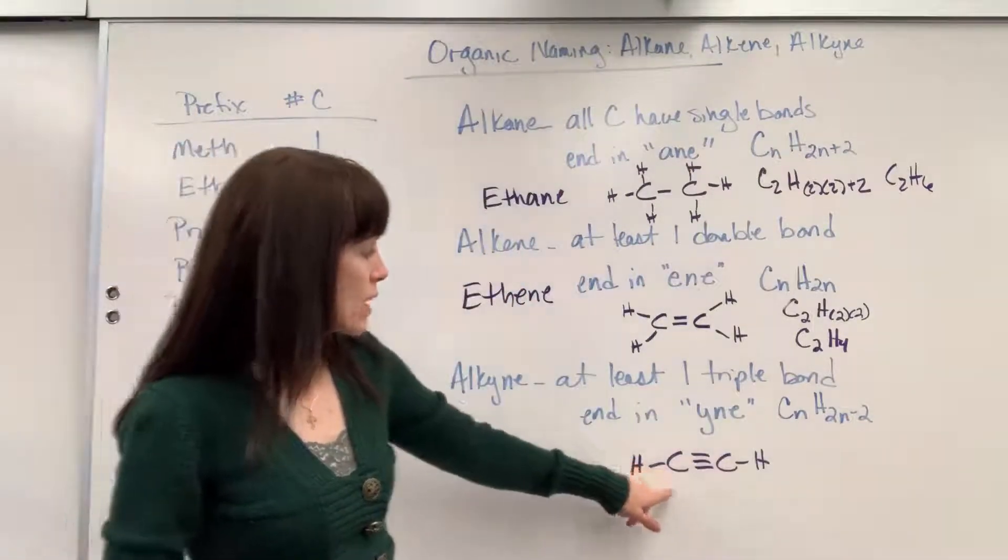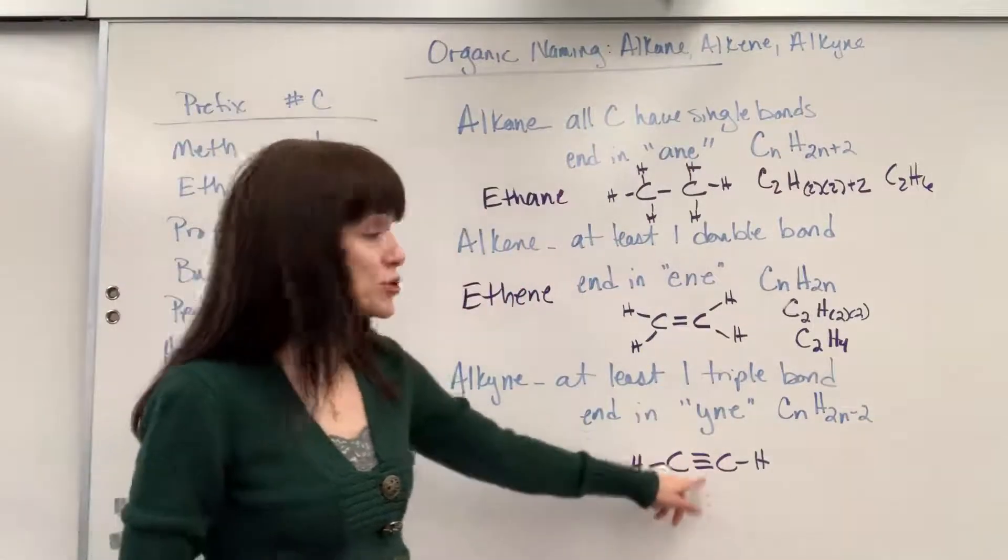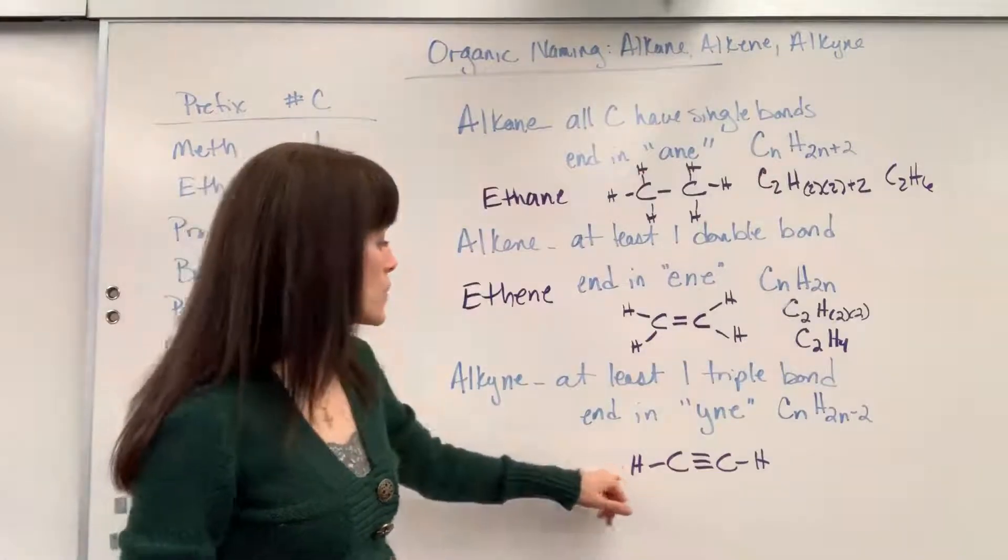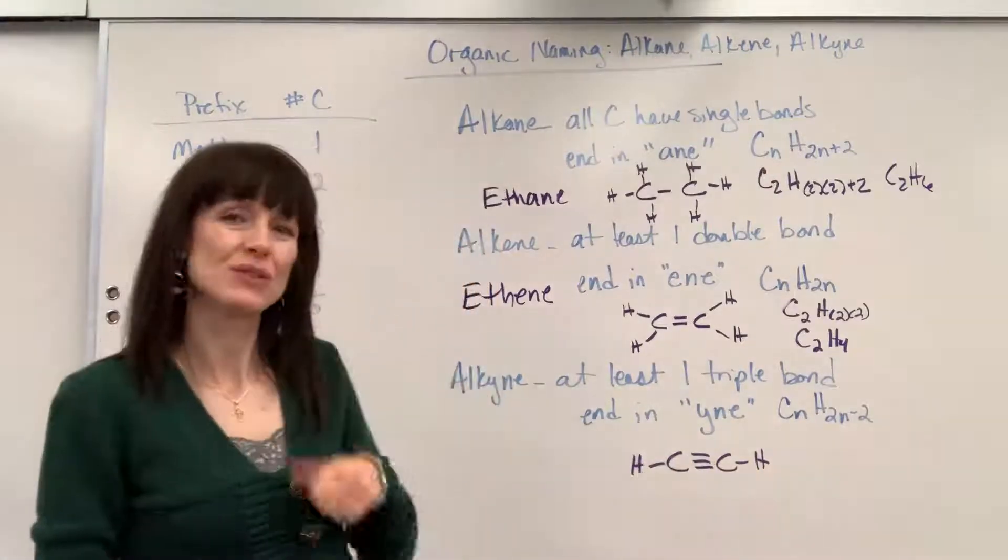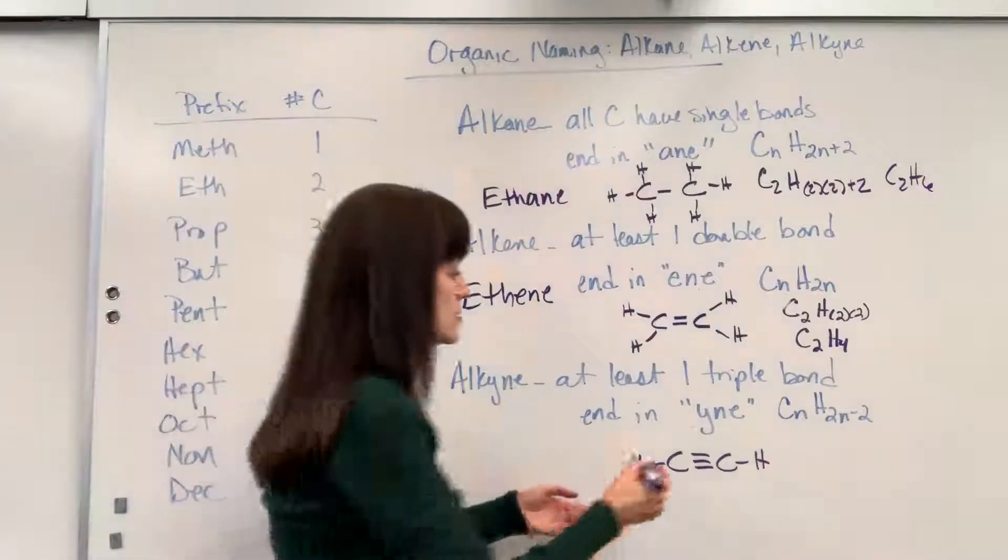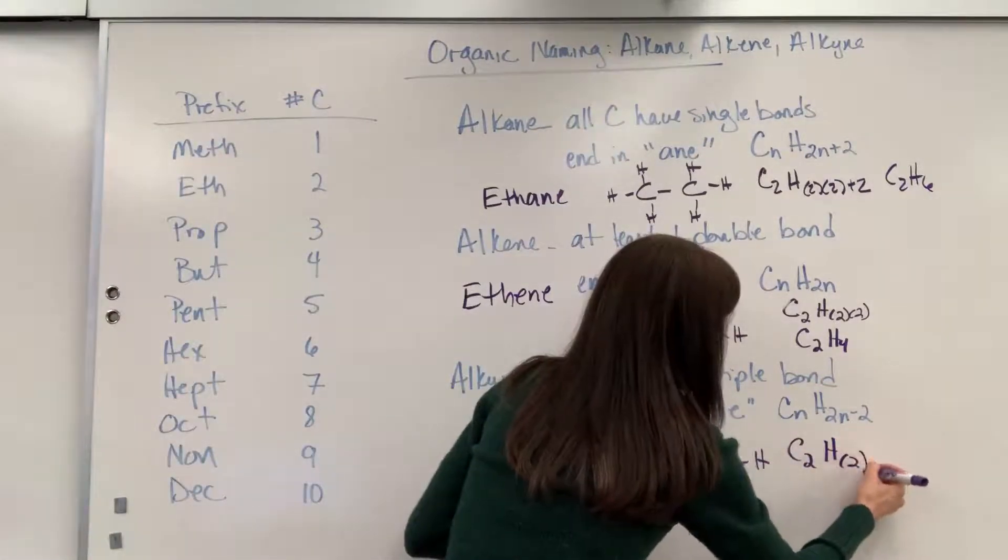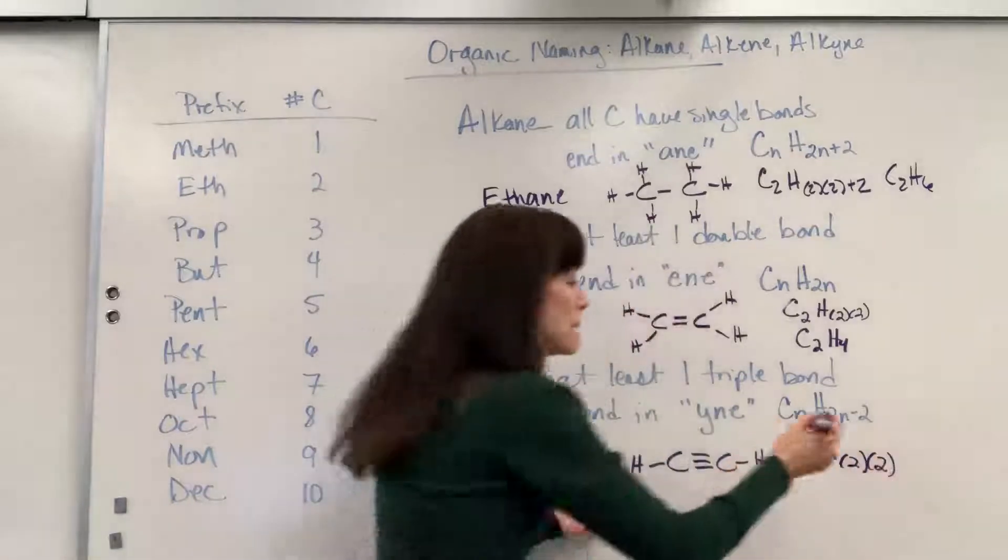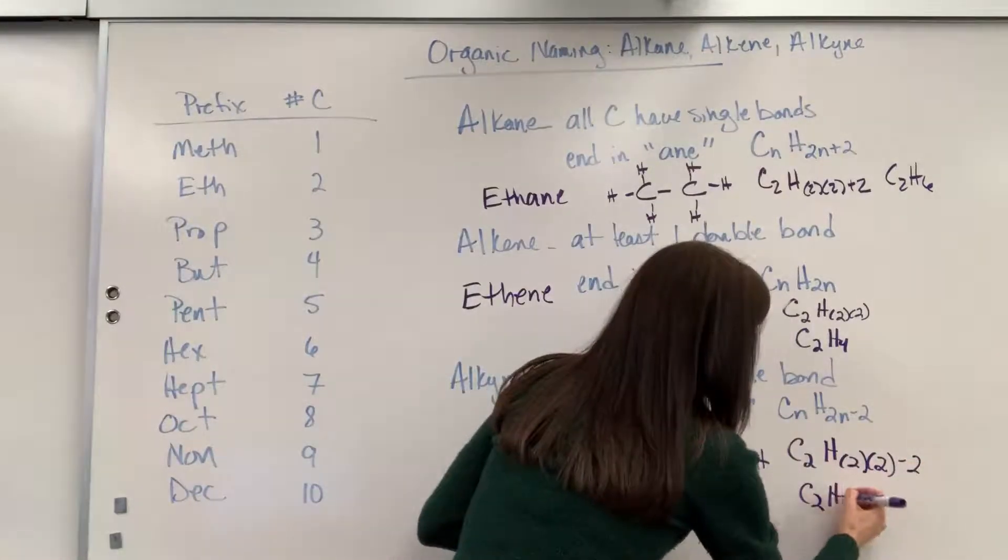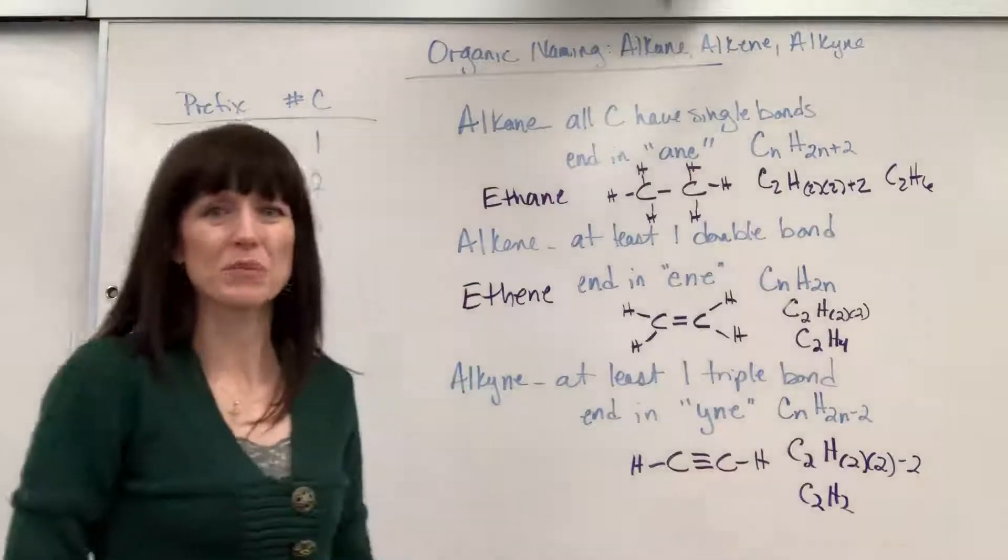So here's an example. I've got my two carbons with the triple bond, and so we only have one hydrogen on each of those carbons. If we plug in, do the math, we've got two carbons and an H, two times two carbons, that's your N, minus two. We're going to get C2H2, and sure enough, that's the chemical formula.